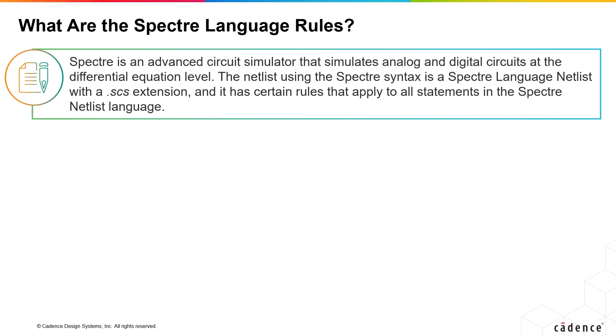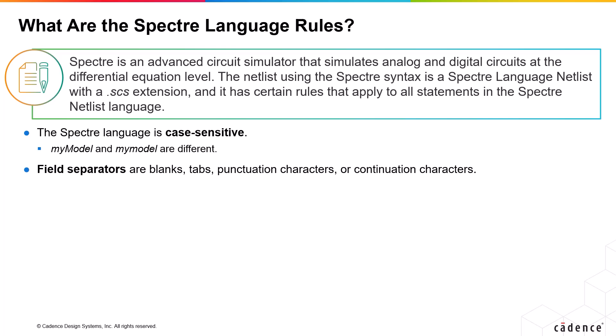This slide covers the general language rules in Spectre NETLIST language. The Spectre language is case-sensitive, so two model names like MyModel and mymodel are different when used in the Spectre environment. The field separators in Spectre NETLIST are blanks, tabs, punctuation characters, or continuation characters.